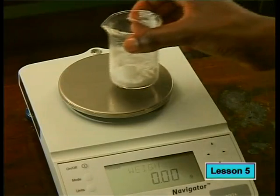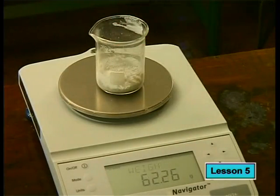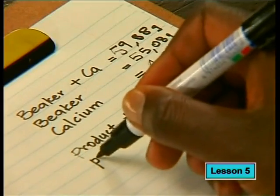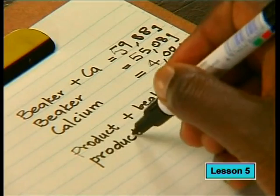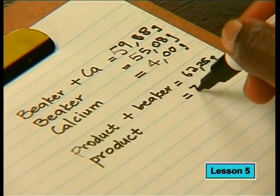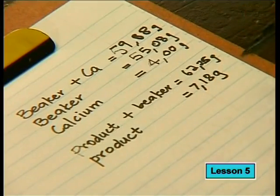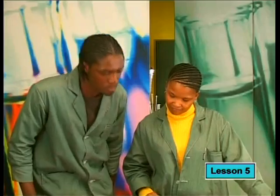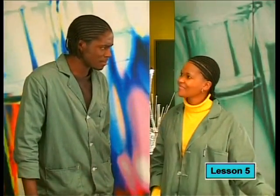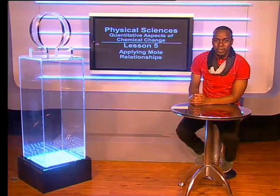Finally we simply need to find the mass of our product. If the mass is 5.6 grams then the product must be calcium oxide, but if the mass is close to 7.4 grams then the product formed must be calcium hydroxide. The mass of the beaker and product is 62.26 grams; the mass of the beaker at the start was 55.08 grams; so the mass of the product is 7.18 grams — very close to the theoretical value for calcium hydroxide. So the powder must be calcium hydroxide.